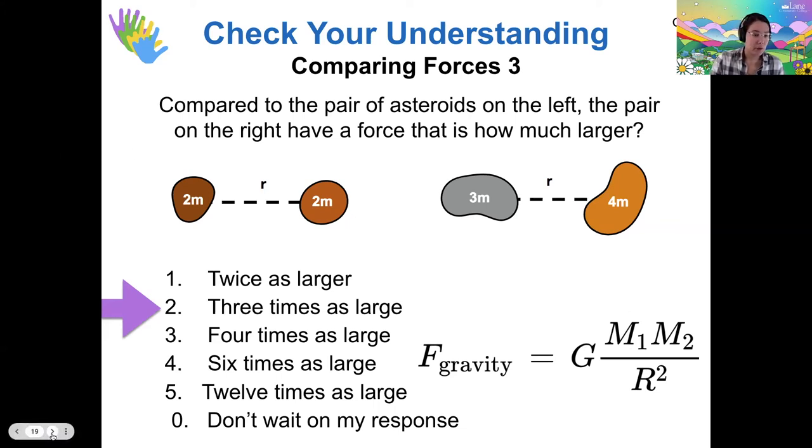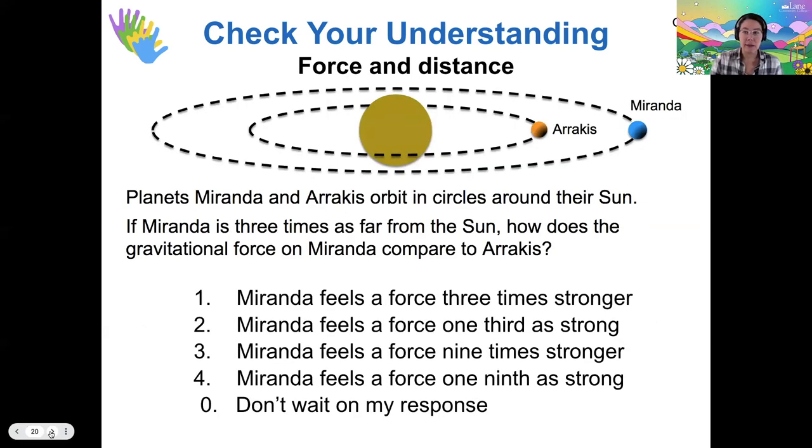So I'm going to give you one more here related to the distance. So now let's assume that we have a solar system that has two planets, Arrakis and Miranda, and one sun. In Dune it would be two suns, but forgive me. Let's say that Arrakis and Miranda have the same mass. We know that Miranda is going to feel a weaker force than Arrakis because it's farther away. How much weaker do you think that would be?